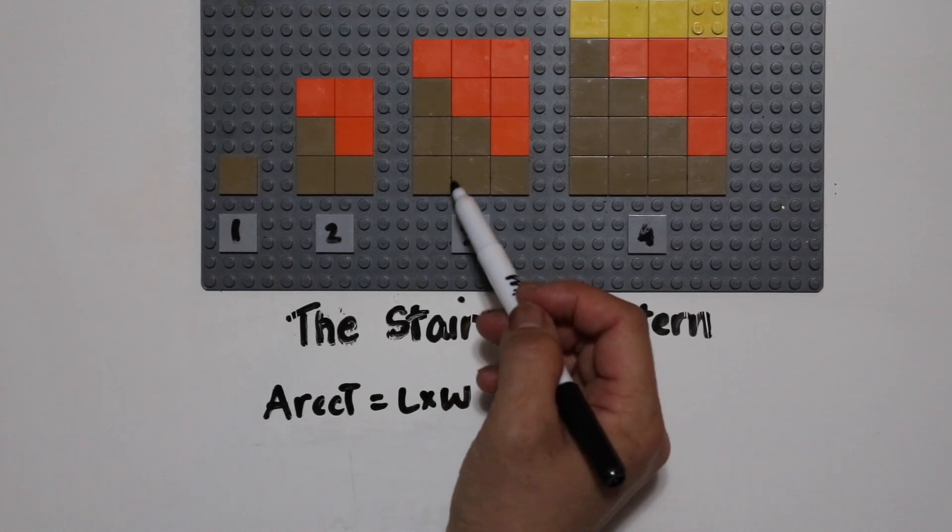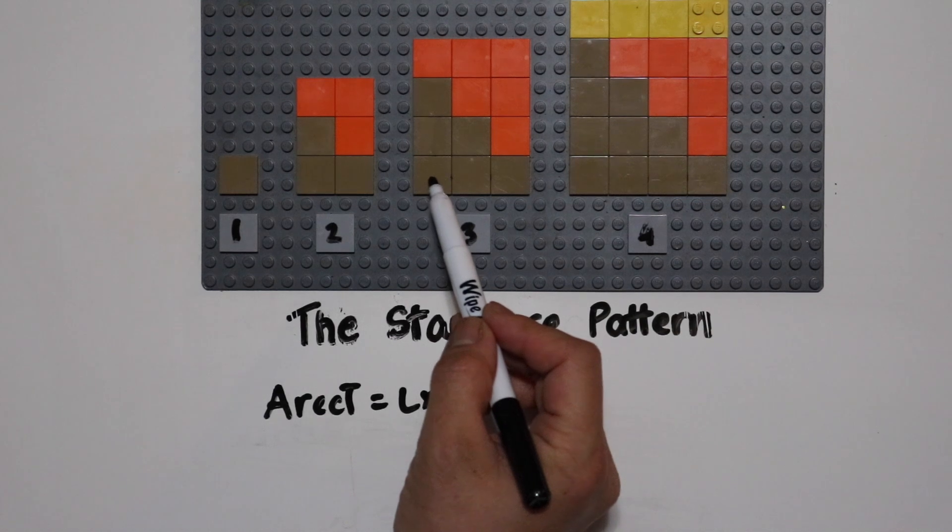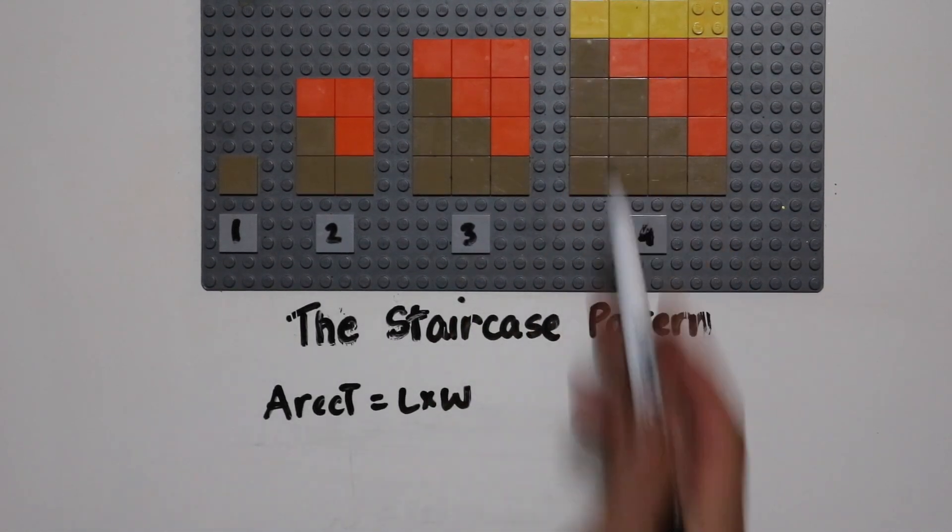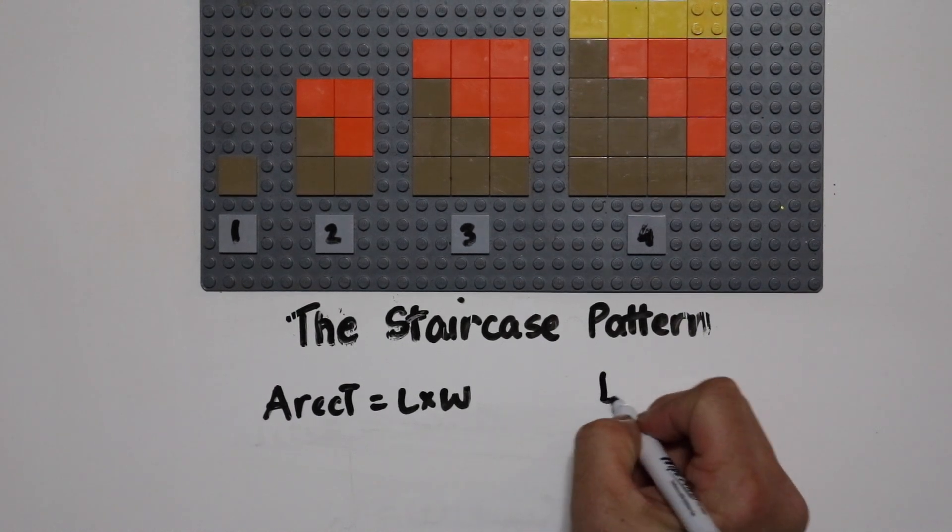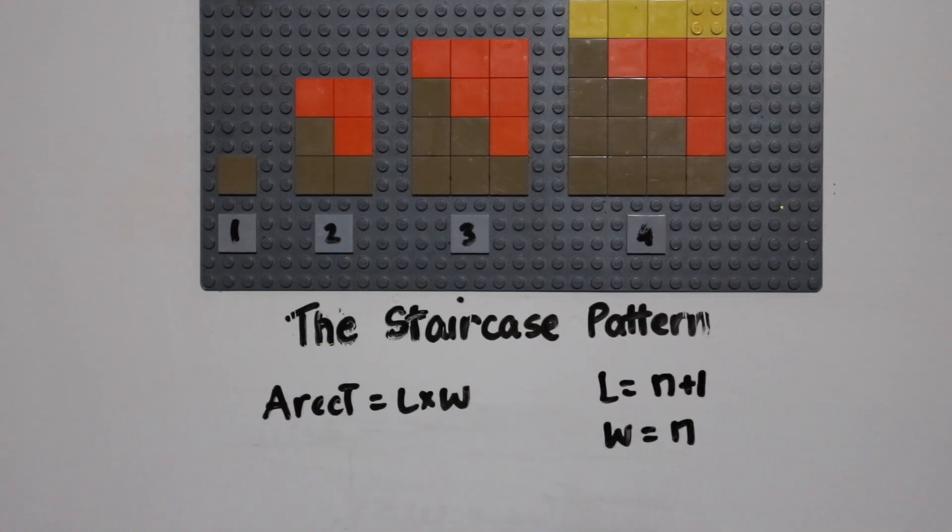The length here, if we look at it, is the figure number plus one, and the width is the figure number. Figure number for width, figure number plus one for the length. So length is n plus one and the width is the figure number.